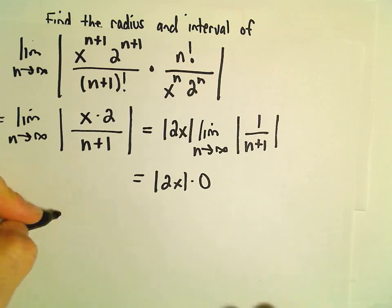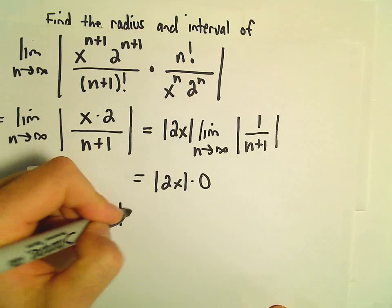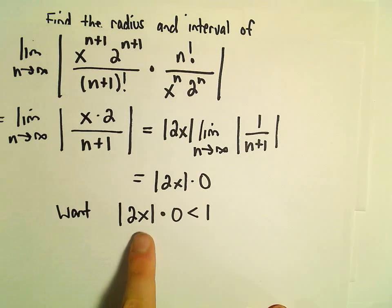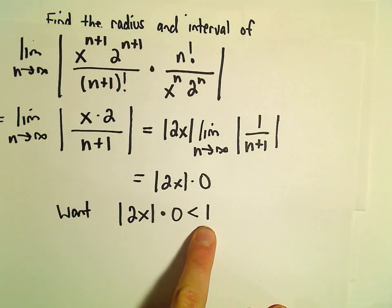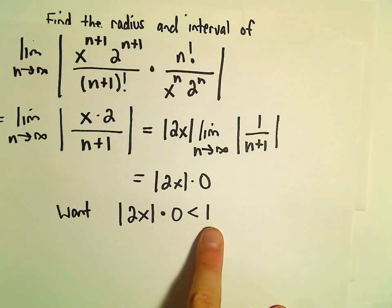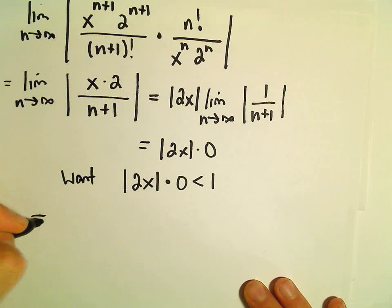We want to figure out what values of x we can plug in so that when we multiply, we get something less than 1. Well, no matter what you plug in for x and multiply by 0, you'll always get something less than 1.